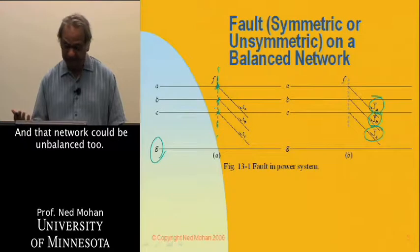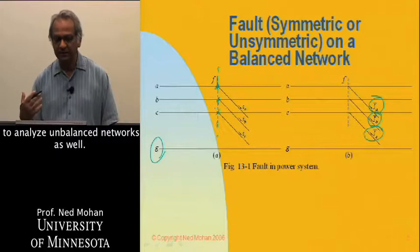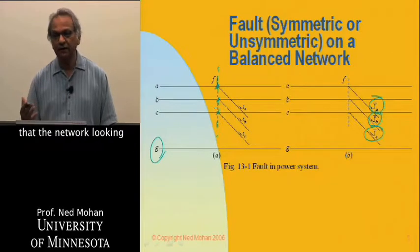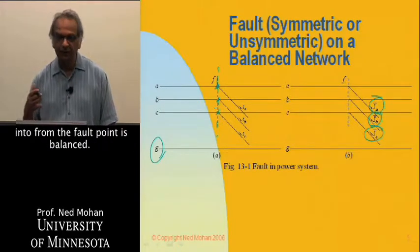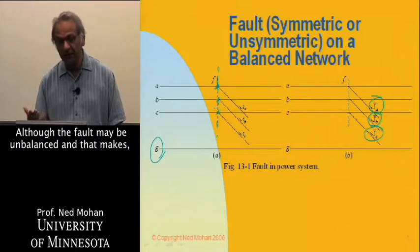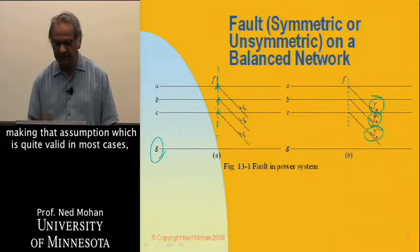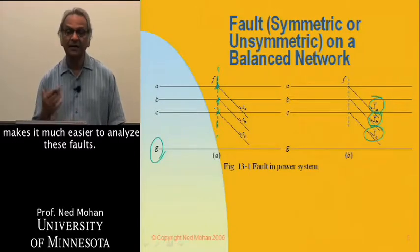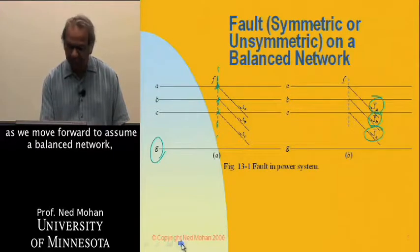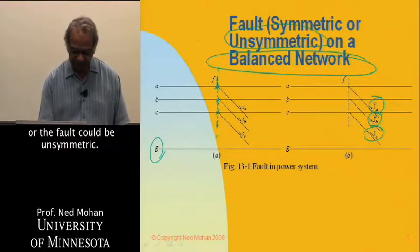That network could be unbalanced too. There are techniques to analyze unbalanced networks as well. But by and large, for most studies, we can assume that the network looking into from the fault point is balanced as far as the phases are concerned, although the fault may be unbalanced. Making that assumption, which is quite valid in most cases, makes it much easier to analyze these faults. That would be the basis for our discussion as we move forward, to assume a balanced network, but the fault could be unsymmetric.